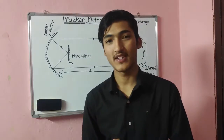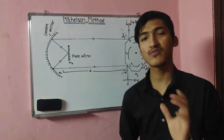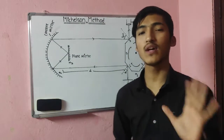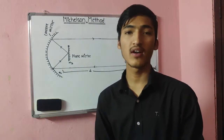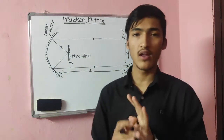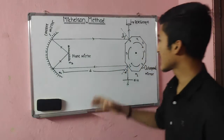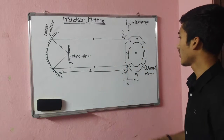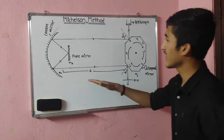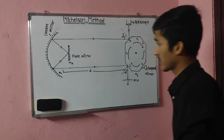Among various methods, the Michelson method is the most precise and well-known method for measuring the speed of light. As you can see, I have drawn the experimental arrangement of the Michelson method.